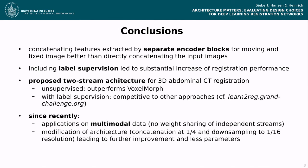As conclusions, we investigated several architectures for deep learning-based deformable image registration. Besides the expected observations that increased numbers of feature channels and convolutional normalization–activation sequences led to improved registration results, we found that concatenating the features extracted by separate encoder blocks for moving and fixed images achieved better results than directly concatenating the input images. With this two-stream architecture, we were able to outperform the simple baseline VoxelMorph. Furthermore, since we performed our experiments on a labeled dataset, we could show that including label supervision when training our model led to a further increase of Dice overlap.